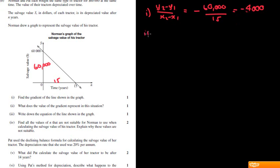So part 2. Remember, make sure you have your sign, because it's going left to right, it's going downwards. That's a negative 4,000. All right, what does the value of the gradient represent in this situation? So the gradient, often which we say is the rate of change. So in this case, it's our rate of depreciation. So it's that constant rate that I'm losing value each year, or the value of depreciation.